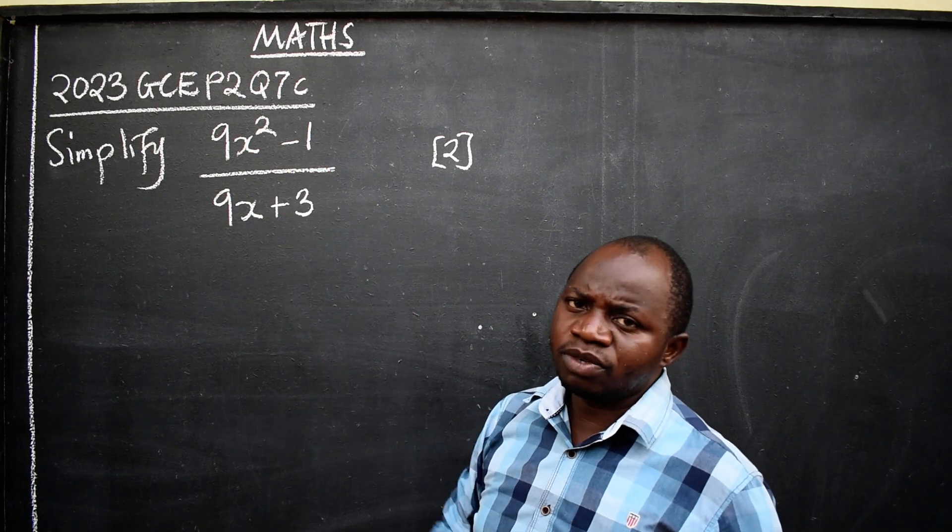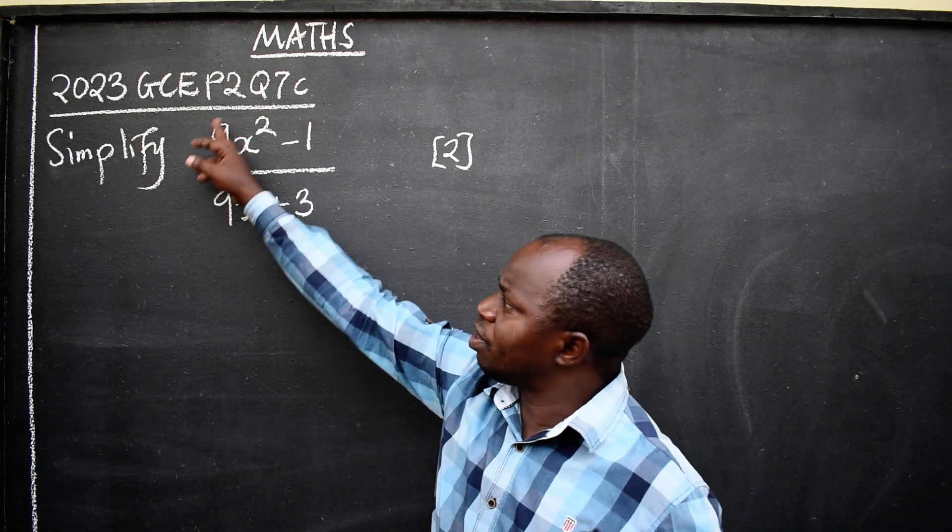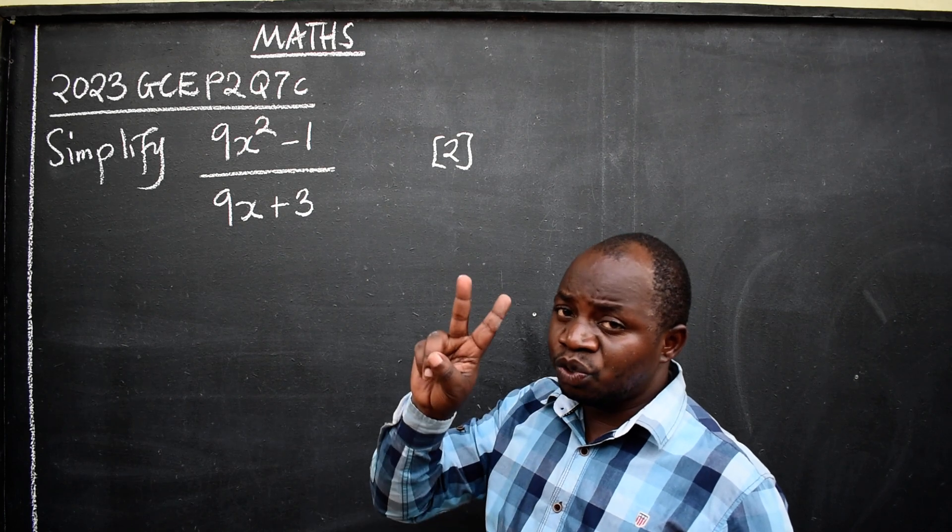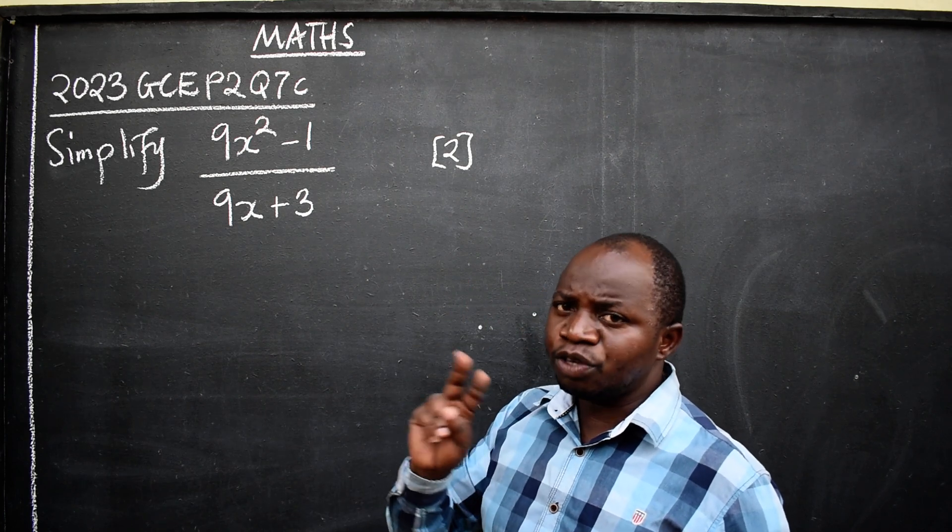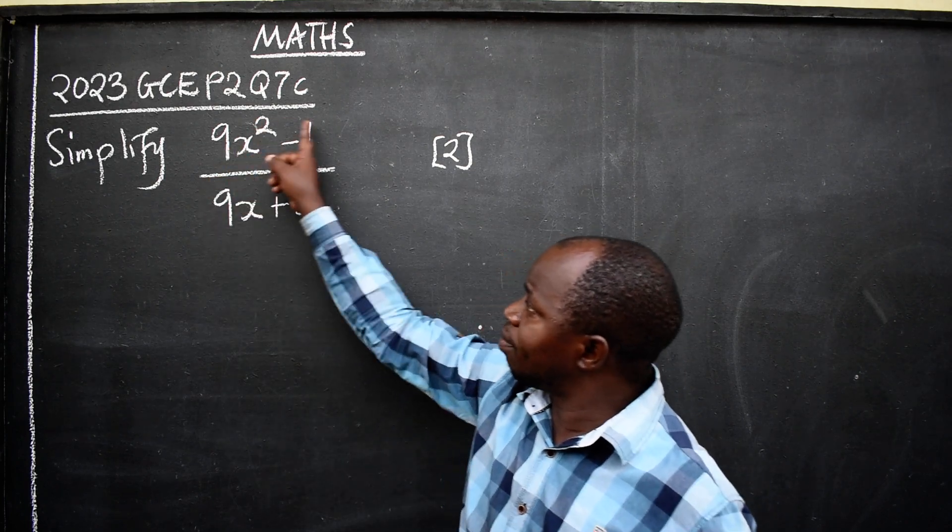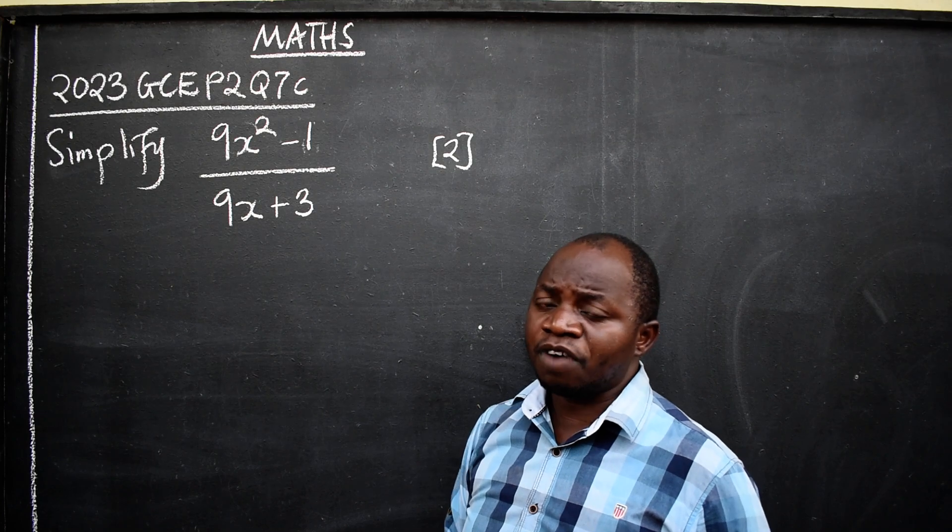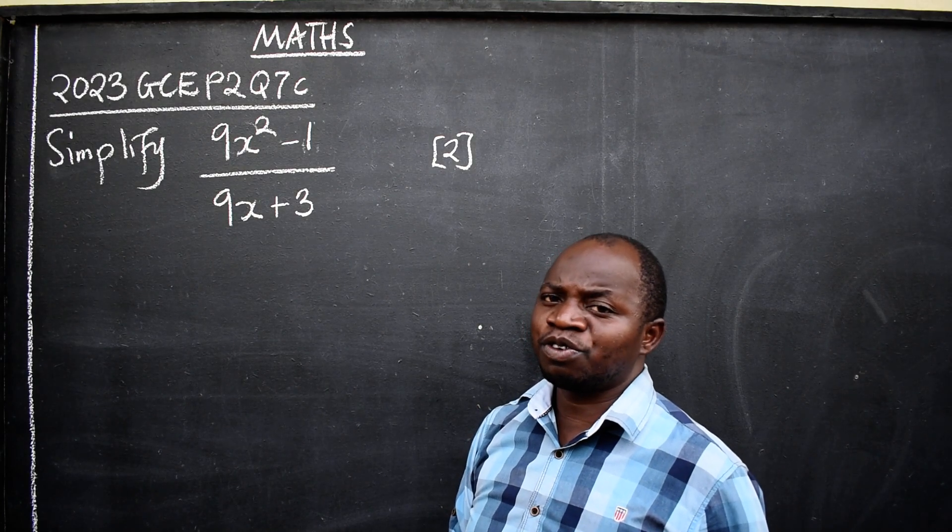I'll look at the number of terms. I'll start with the numerator. How many terms do I have? Two of them. In between the two terms, there's a minus. It means what type of factorization? Difference of two squares.